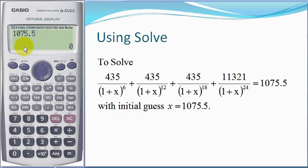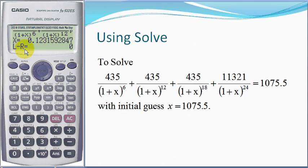Wait for a while and the calculator will show you the answer. For x equals 0.123, the left-hand side of the equation minus the right-hand side of the equation equals 0. Thank you.